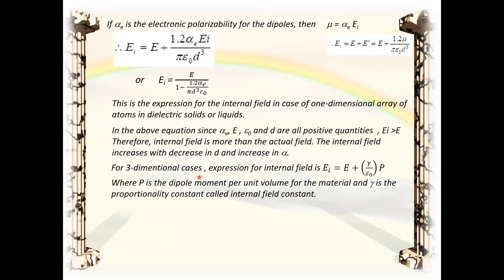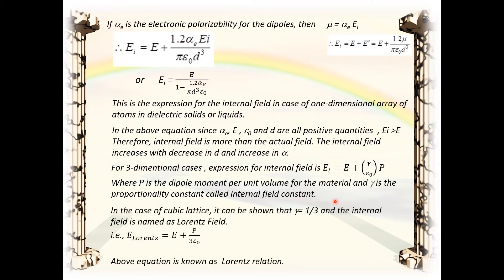For the three-dimensional case, the expression for the internal field is E_I equal to E plus (gamma / epsilon_0) into P, where P is the dipole moment per unit volume and gamma is the internal field constant. In the case of a cubic lattice, gamma equals 1/3, and the internal field is named the Lorentz field: E_Lorentz equal to E plus P divided by 3 epsilon_0. This equation is known as the Lorentz equation.